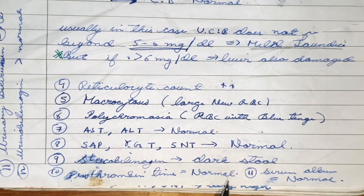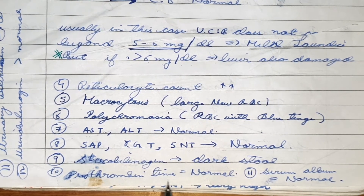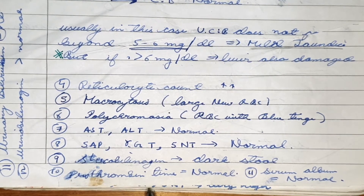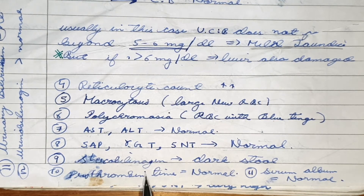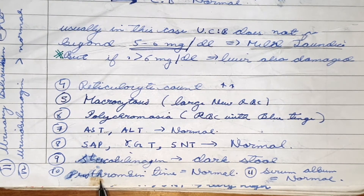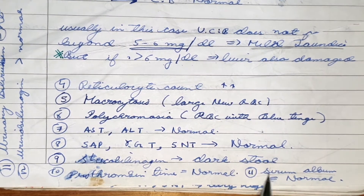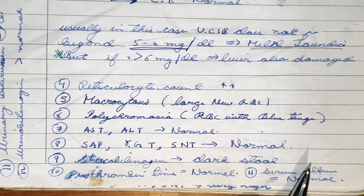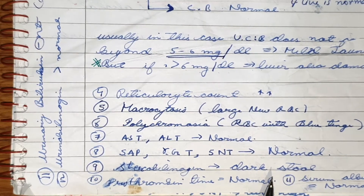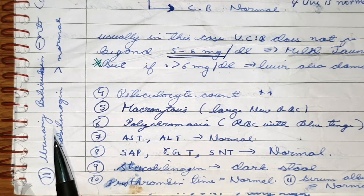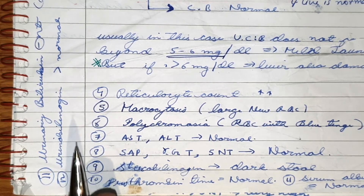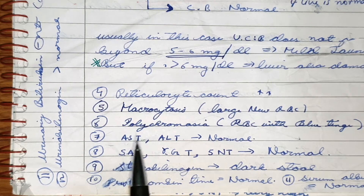Prothrombin time is normal and serum albumin is normal because the liver is functioning properly — it is secreting proteins responsible for clotting factors and also forming albumin. So albumin levels also remain normal.